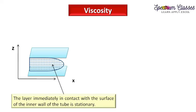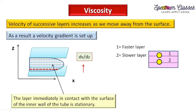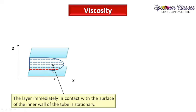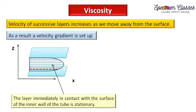The surface layer appears stationary because it is in contact with the glass surface, whose molecules are stationary. Those glass molecules do not provide any acceleration to the fluid molecules in that layer, so acceleration is zero. By Newton's second law, F = ma, if acceleration is zero then force is also zero, so this layer experiences no net force and appears stationary. As we move upward, a velocity gradient dv/dz is established.